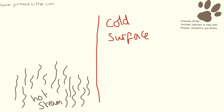We are going to get condensation when we have hot steam hitting a cold surface. When the steam comes up, it is going to form back into water droplets and then start to run down the surface. So it's when it hits a cold surface, or colder surface rather, that's when it's going to condense back into a liquid.